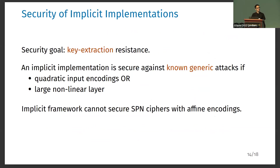As in previous methods, the implicit framework only targets the security goal of key-extraction resistance. We assume the attacker is in possession of an implicit implementation, knows the method and all the details, but does not know the key or the encodings. The goal of the attacker is to extract the key from the implicit implementation. To understand the security of this method, we first consider all known generic attacks — those that can be applied to any white box implementation of any cipher, because they do not exploit the underlying properties of the cipher. We focus on generic attacks because sometimes breaking a white box implementation of a particular cipher may not say much about the security of the method. Also, previous methods like the CD framework have been fully broken with generic attacks, so any new method secure against all known generic attacks is a significant advance.